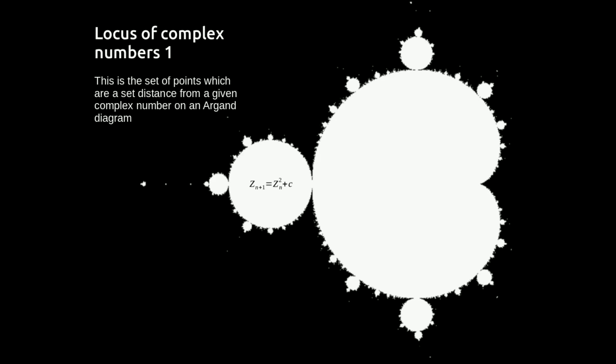This is the first of three videos looking at the locus of points of complex numbers. This first one looks at the set of points which are a set distance away from a given number on an Argand diagram.